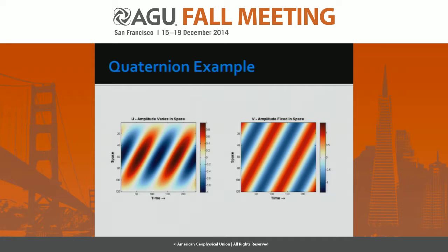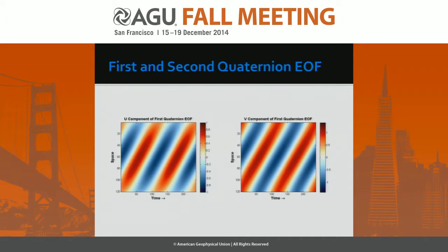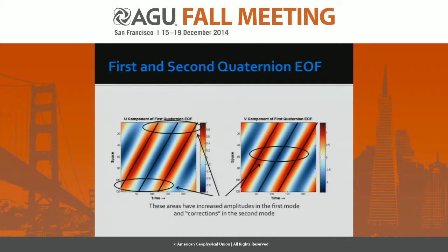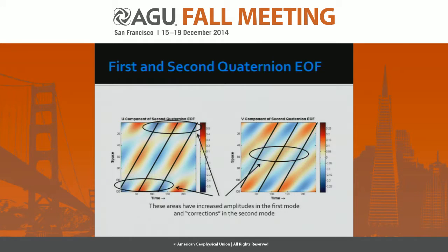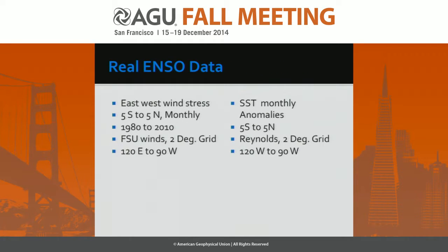Here's a simple example. We have the east-west velocity on the left side and the north-south velocity on the other, but the amplitude is slightly different between the two components. When we do the quaternions, the first mode captures almost all the structure. There are some small pieces it doesn't capture, but certainly if you found that in your data, you would conclude it was meaningful.